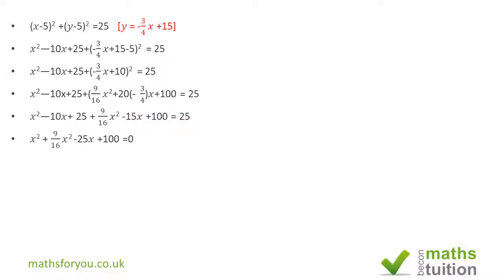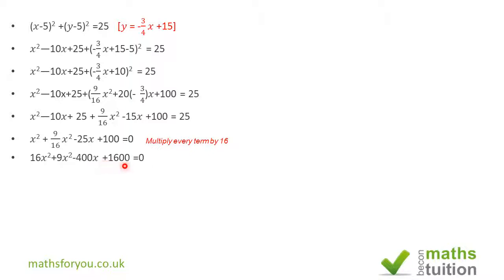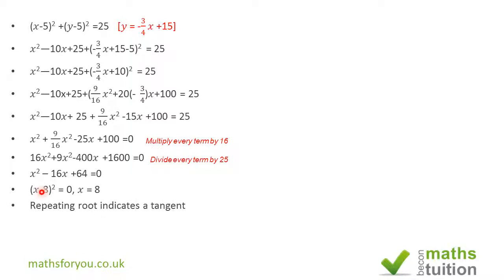Multiplying every term by 16 to clear fractions gives 16x² + 9x² − 400x − 600 = 0, which simplifies to 25x² − 400x − 600 = 0. Dividing every term by 25 yields x² − 16x + 64 = 0. Factorising gives (x − 8)² = 0, a repeated root, which confirms algebraically that the line is indeed tangent to the circle at that point.